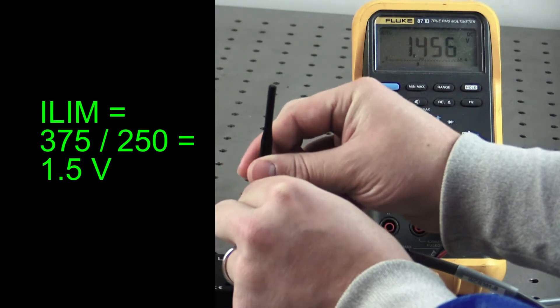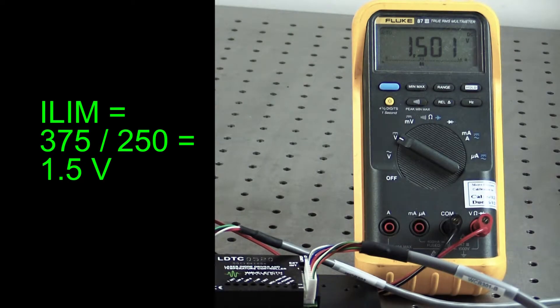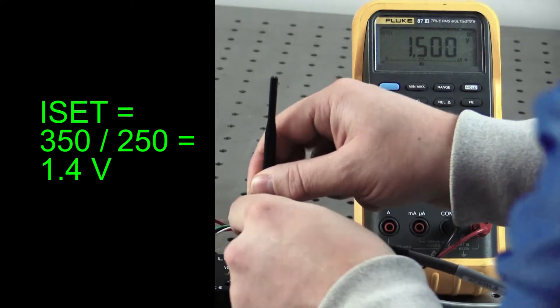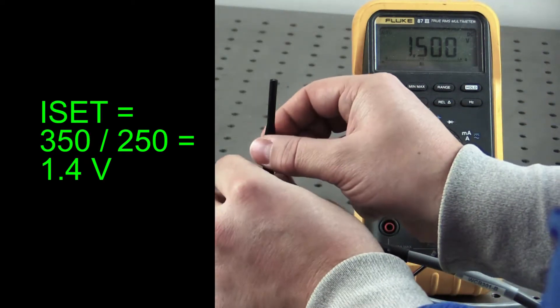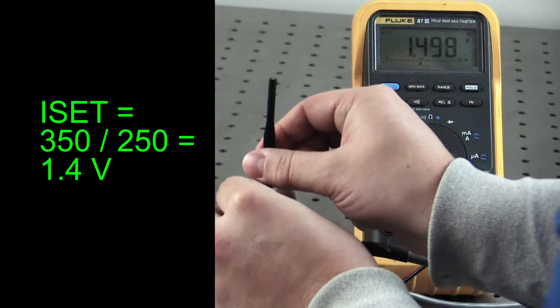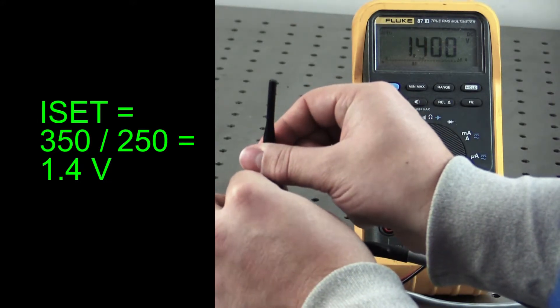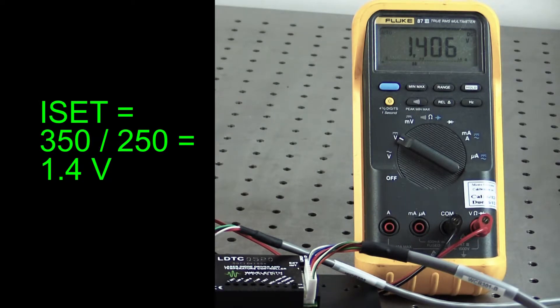Next, the set point must be configured. Still monitoring LD Imon, turn the ISET trim pot down until the voltage is 1.4 volts. Now, the set point is 350 milliamps. Disable the output current and switch off the power supply. The LDTC0520 is now fully configured for local control.